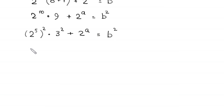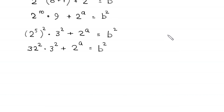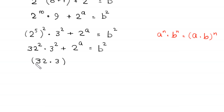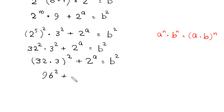This 9 can be written as 3 squared. So we have 2 to the power 10 times 3 squared plus 2 to the power a is equal to b squared. Now, 2 to the power 10 is equal to 2 to the power 5 squared, which is 32 squared. So this becomes 32 squared times 3 squared plus 2 to the power a is equal to b squared. Using the property a to the power n times b to the power n equals a times b whole to the power n, 32 squared times 3 squared becomes 96 squared. So 96 squared plus 2 to the power a is equal to b squared.